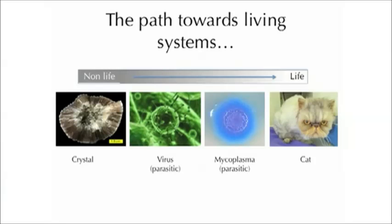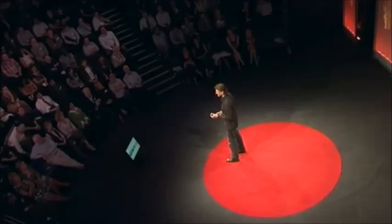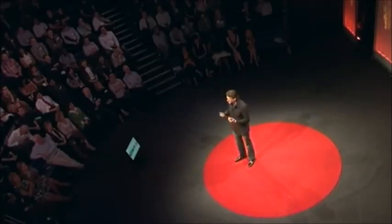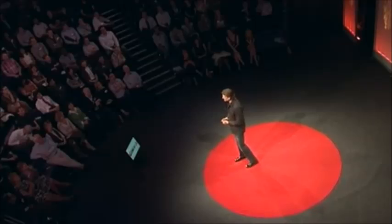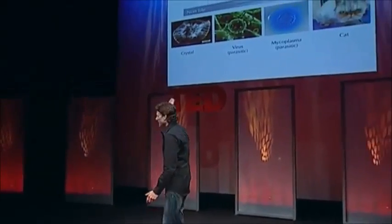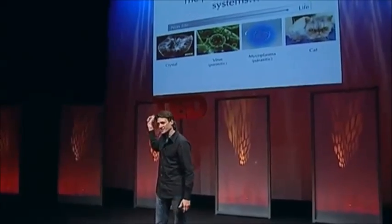We'll just take one example here. A virus is a natural system, but it's very simple. It doesn't really satisfy all the requirements — it doesn't have all the characteristics of living systems, and in fact it's a parasite on other living systems in order to reproduce and evolve. But what we're going to be talking about here tonight are experiments done on the sort of non-living end of this spectrum.